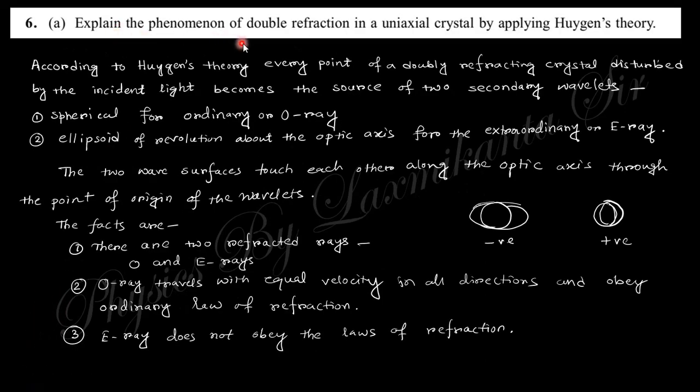The next question says: explain the phenomenon of double refraction in a uniaxial crystal by applying Huygens' theory. Double refraction means when light enters a crystal, it splits into two parts — one is the ordinary ray which obeys Snell's law, and another is the extraordinary ray which does not obey Snell's law. This can be explained by Huygens' principle, where any point source is treated as a secondary wavelet source.